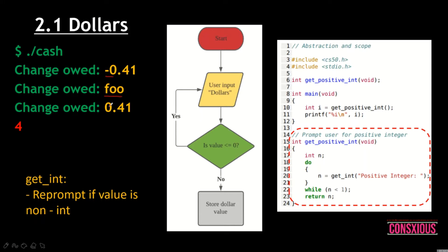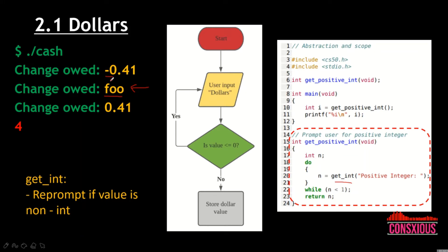If the user keys in a negative value or non-integer, the program will re-prompt the user. We'll use something like a do-while loop with get_float. For non-integer handling, get_float already has conditions to re-prompt if the value is non-integer, so we don't need to consider that separately — all we need to handle is the negative value case.